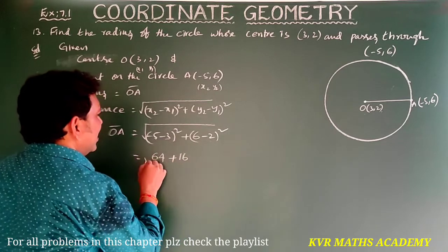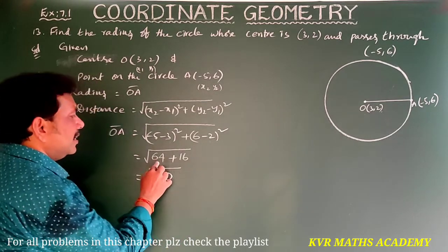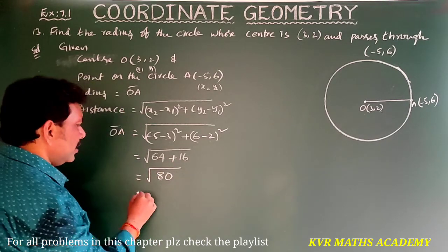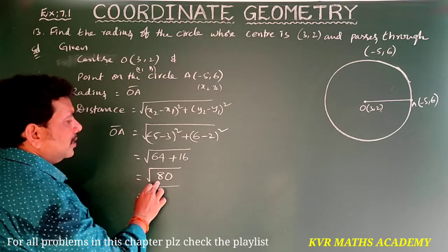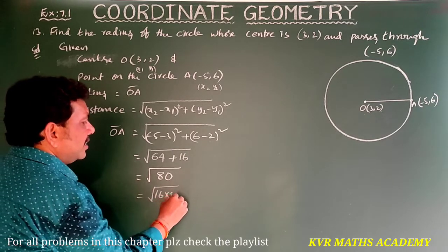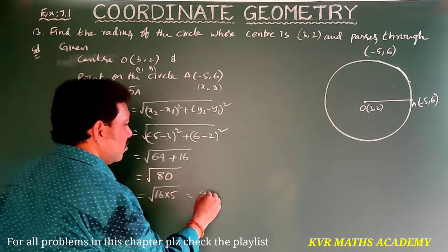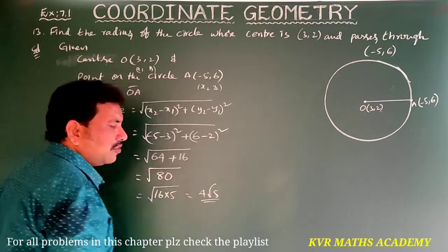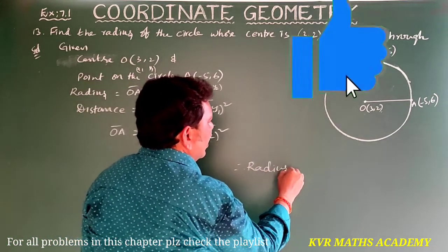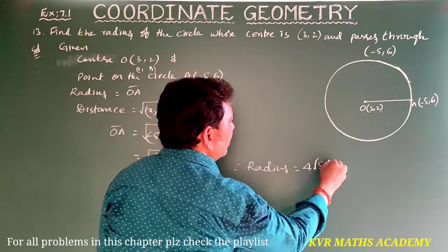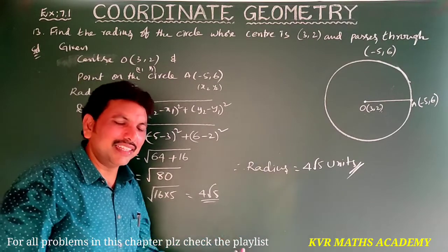That is equal to square root of 80. This can be written as square root of 16 times 5, and square root of 16 is 4, so we get 4 root 5. Therefore the radius is equal to 4 root 5 units.